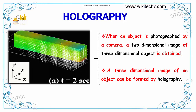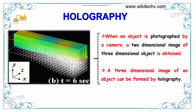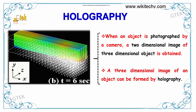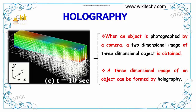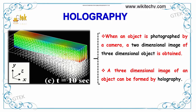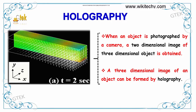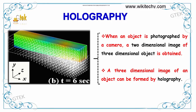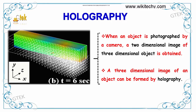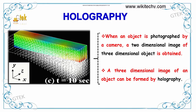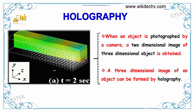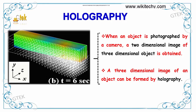Holography is one of the major techniques where when an object is photographed by a camera, a two-dimensional image of a three-dimensional object is obtained. However, the three-dimensional image of an object can be formed by holography.